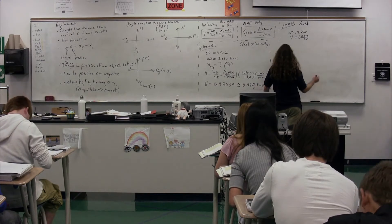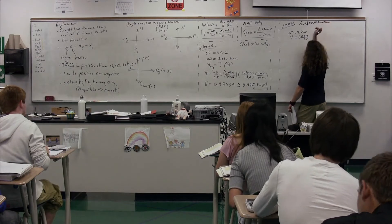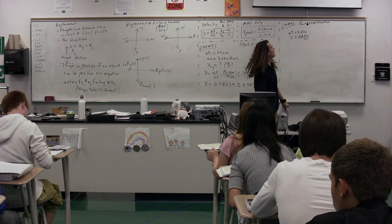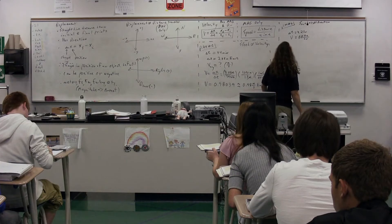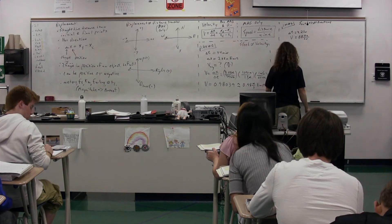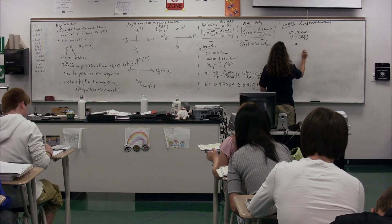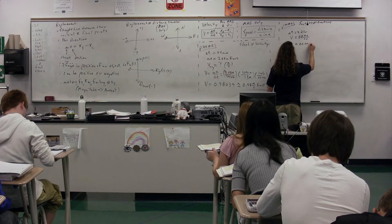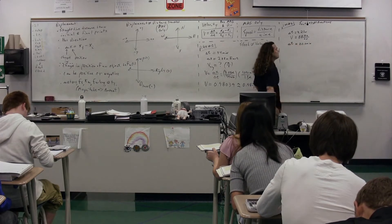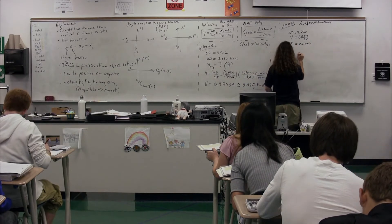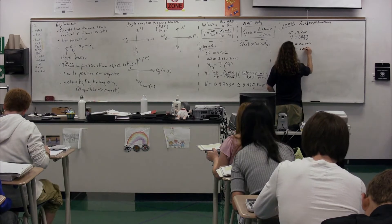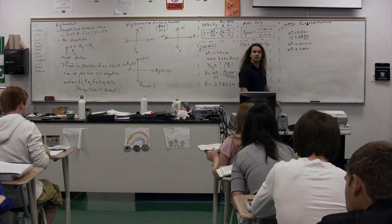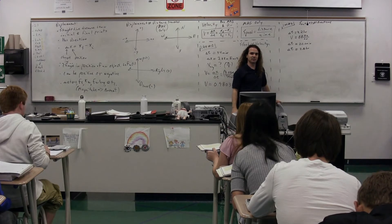A bus traveled south along a straight path for 3.2 hours. So you have south, which is the direction — we'll write that up here. And 3.2 hours is the time. With an average velocity of 88 kilometers per hour — so the 88 kilometers per hour is the velocity.